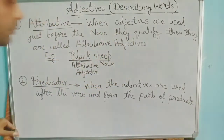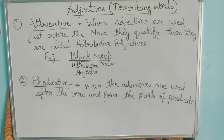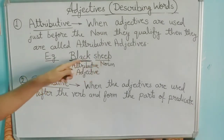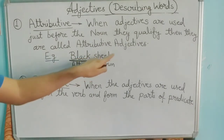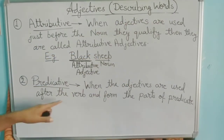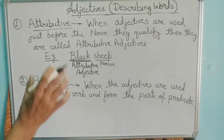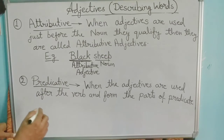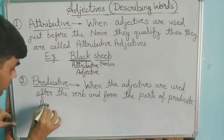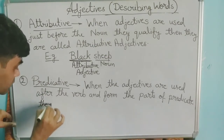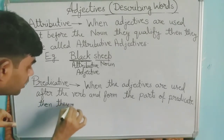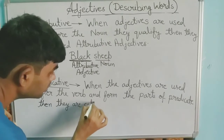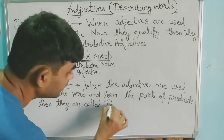When we use adjectives after the verb — whereas before we were using them just before the noun — now they come after the verb. When the adjective comes after the verb, it becomes part of the predicate, and they are called Predicate adjectives.